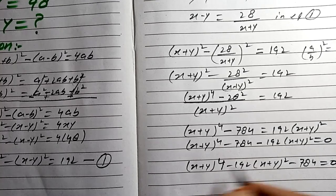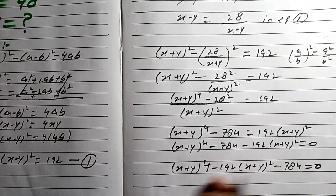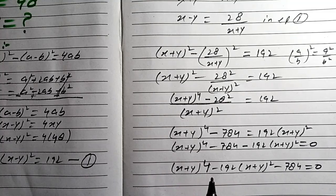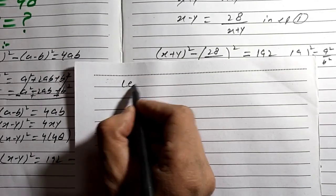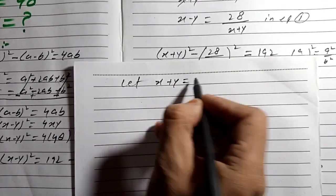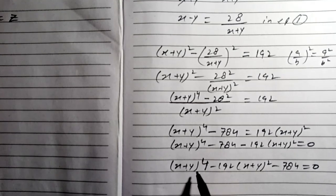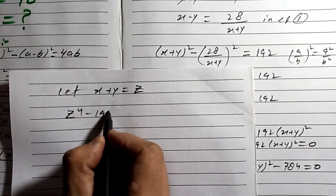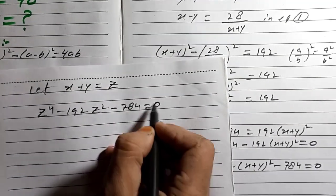We convert this to a quadratic equation by letting z equal x plus y. Then the equation becomes z⁴ minus 192z² minus 784 equals 0.